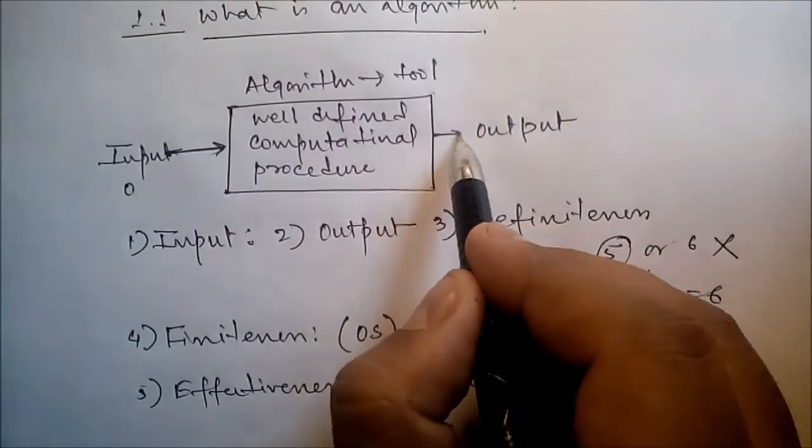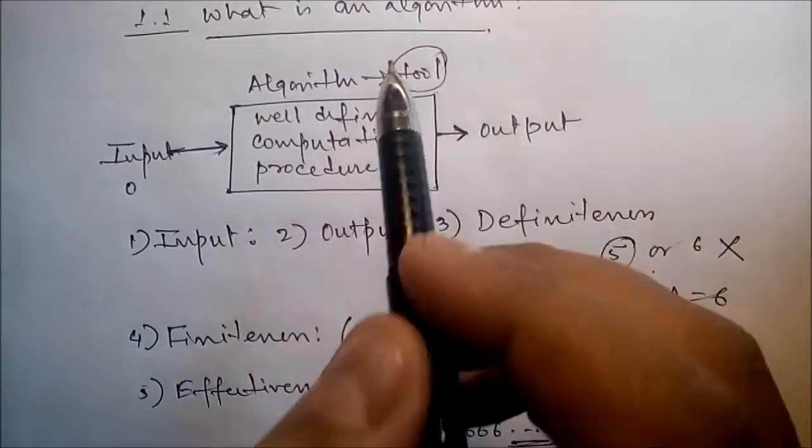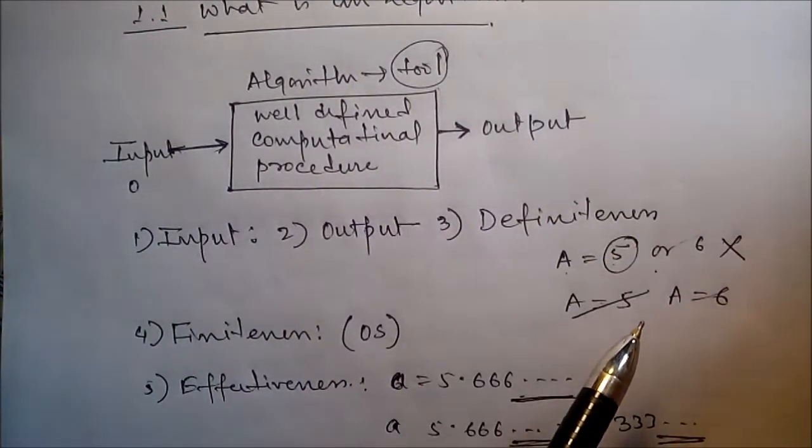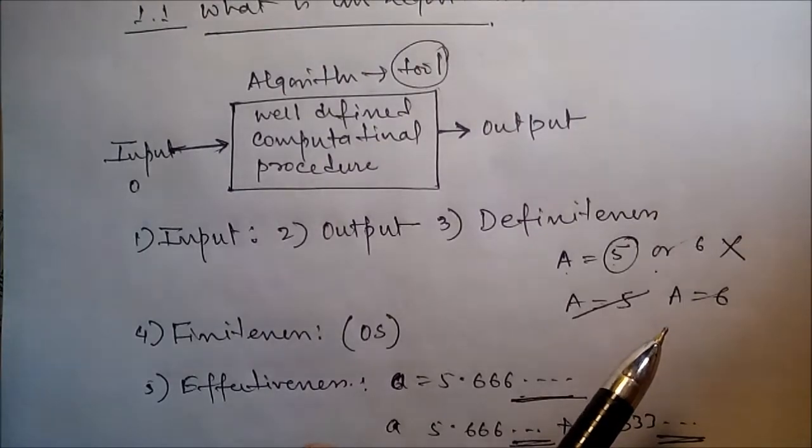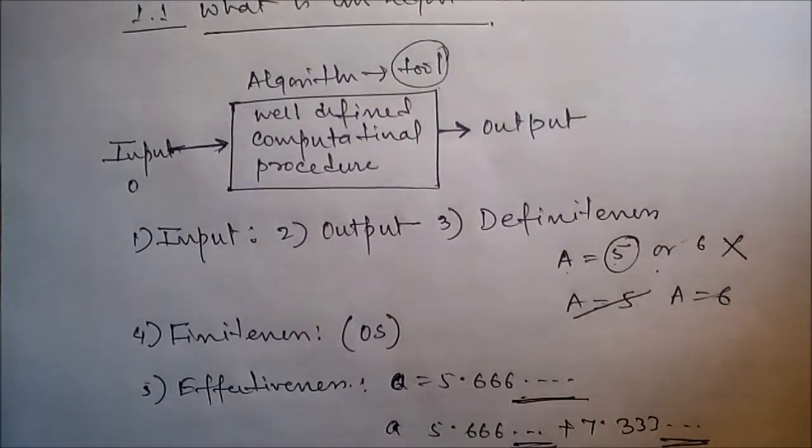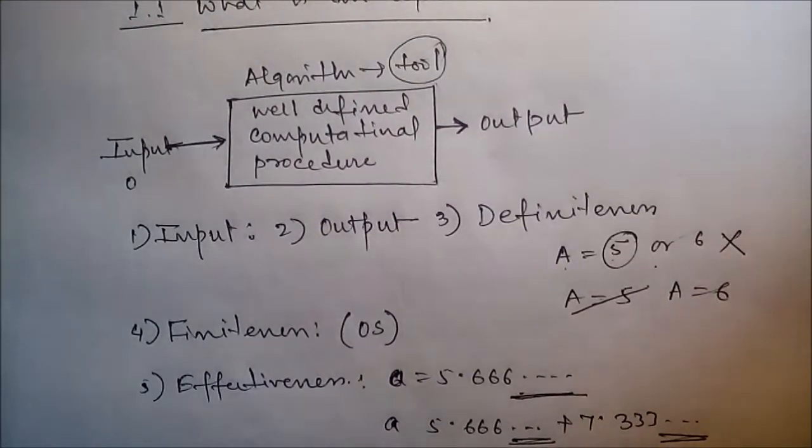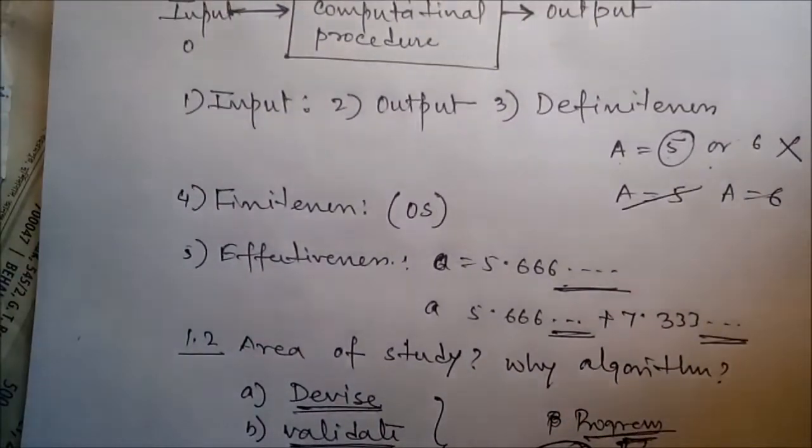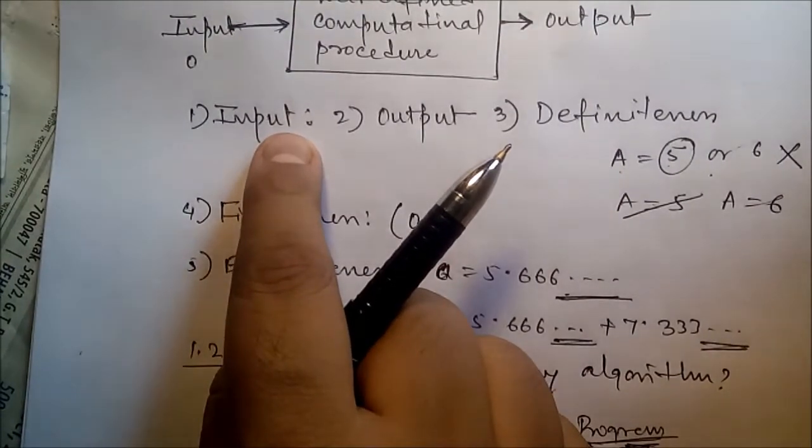In another way we can say: an algorithm is a finite set of instructions that if followed accomplish a particular task. In addition, all algorithms must satisfy the following criteria. So a few criteria we have to satisfy. The first one is input: zero or more quantities are externally supplied.